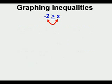The first thing we need to do to make things easier is to turn around the inequality to get the unknown on the left side. When we switch it around, we need to change the direction of the sign as well. So it becomes x is less than or equal to negative 2. And since we're going to graph, it helps to say x is equal to and less than negative 2.